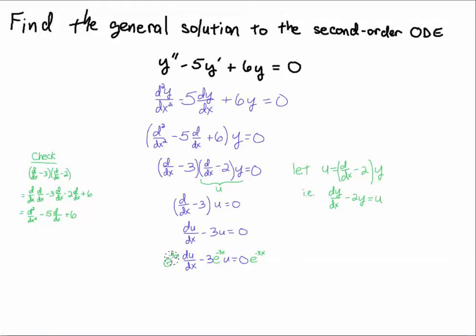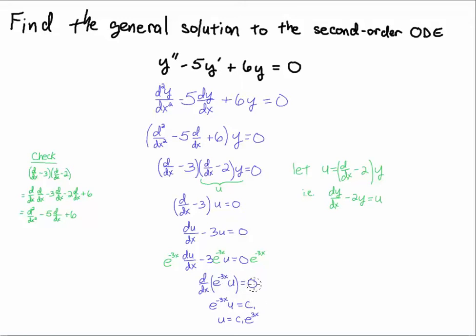I apply the integrating factor e^(−3x) to each term. The left-hand side collapses via the product rule to d/dx[e^(−3x)·u], and 0 times e^(−3x) is 0. So this derivative equals 0, which means the inside must equal a constant. Multiplying both sides by e^(3x) to solve for u, I get u = c₁e^(3x).